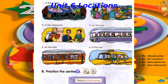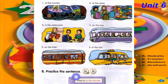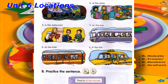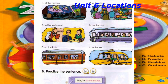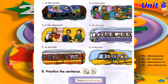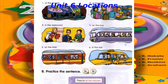Track 39. B. Practice the sentence. They're at the movies. They're at the store. They're in the restaurant. They're on the bus. They're on the train. They're in the taxi.